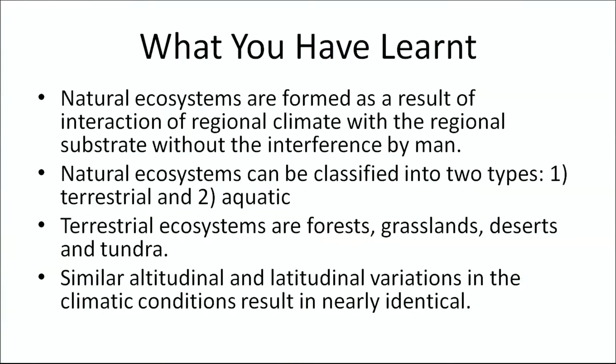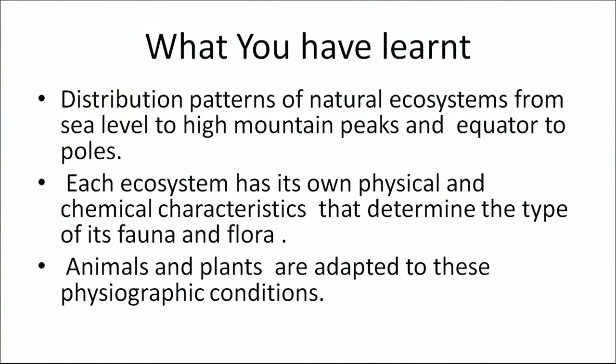Thank you Dr. Lakshmi for sharing information related to natural ecosystems such as forests, deserts and grasslands. To recap: natural ecosystems are formed as a result of interaction of regional climate with regional substrate without interference by humans. They are classified into terrestrial — forests, grasslands, desert and tundra — and aquatic. Similar altitudinal and latitudinal variations in climatic conditions result in nearly identical distribution patterns of natural ecosystems from sea level to high mountain peaks, and from the equator to the poles. Each ecosystem has its own physical and chemical characteristics determining its fauna and flora, and animals and plants are adapted to these physiographic conditions.